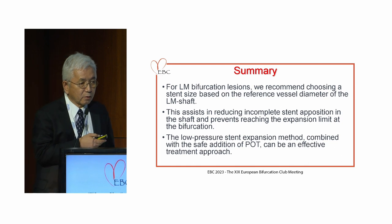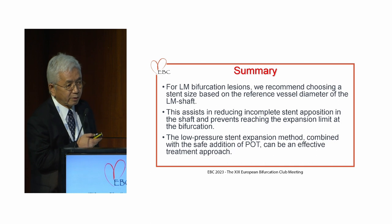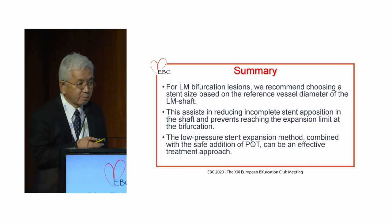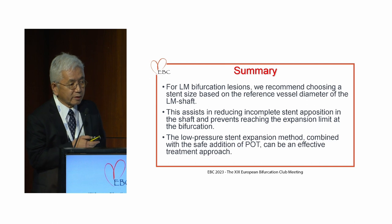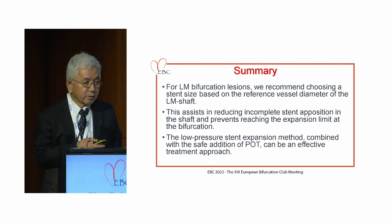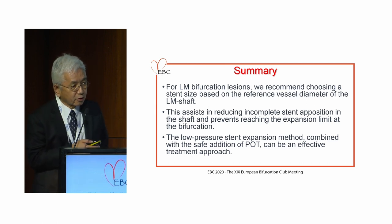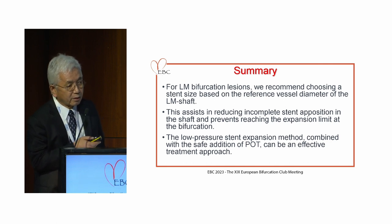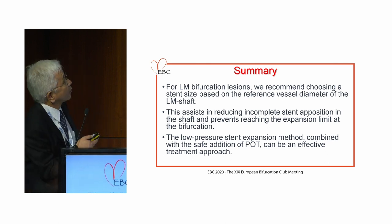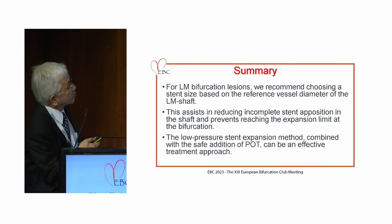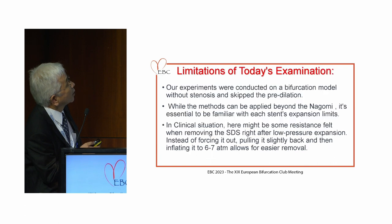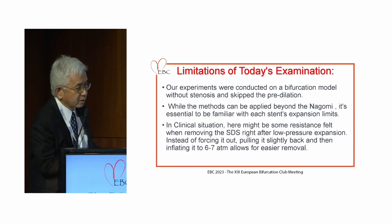In summary, for my bifurcation technique we recommend choosing stent size based on the reference diameter of the left-main shaft. This assists in reducing incomplete stent apposition in the shaft and prevents reaching the expansion limit at the bifurcation. The low-pressure stent expansion method combined with a safe and additional POT can be an effective treatment approach. Thank you very much.